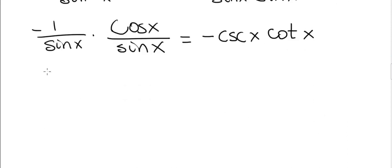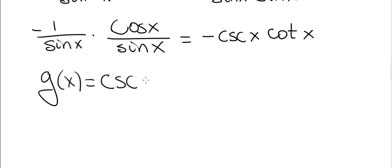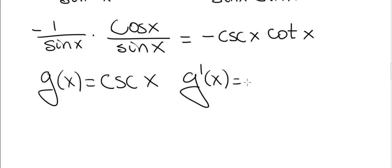Once again, let's summarize this. If g of x equals cosecant of x, its derivative g prime is minus cosecant x times cotangent of x.